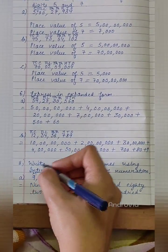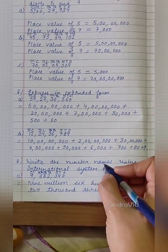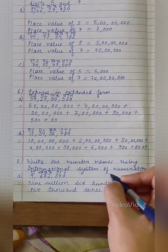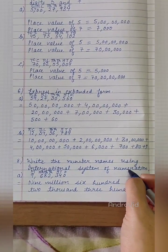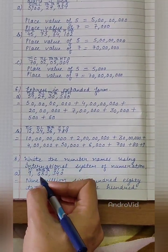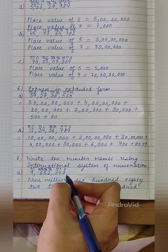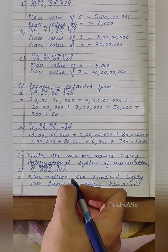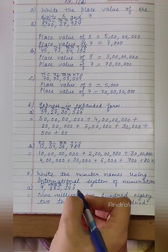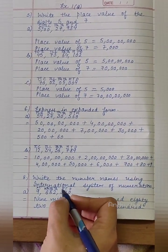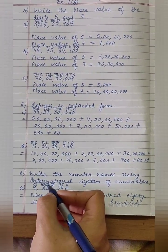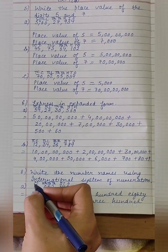Let's move to question number 8. Write the number names using international system of numeration. Part A is 9682340. Firstly, according to international system of numeration, we will write here 1s, 10s, 100s, 1000s, 10,000s, 100,000, million.